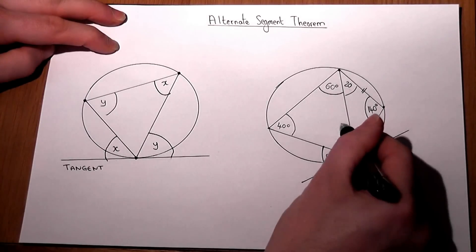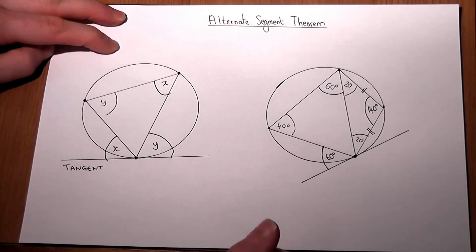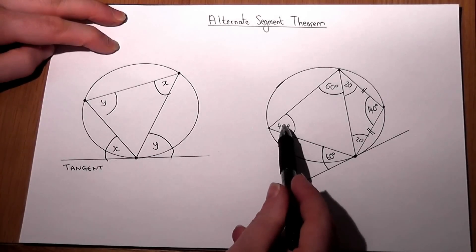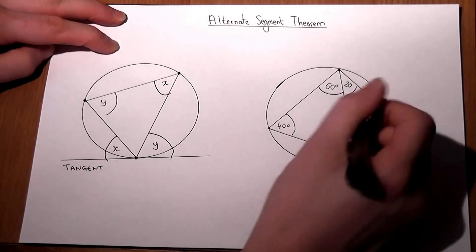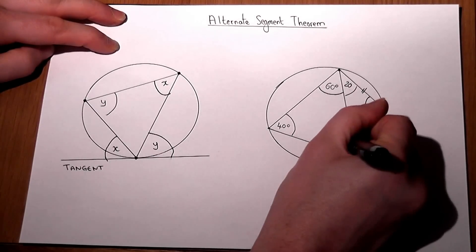We can find that this angle here, due to a triangle, 40 plus 60 is 100. So this must be 80.